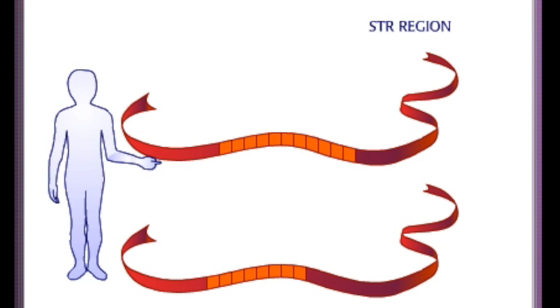STRs are highly polymorphic, having 9 or more different alleles that can be detected. In this example, this person has inherited 2 different alleles of a particular STR, one from his mother and one from his father. He is heterozygous for this STR.